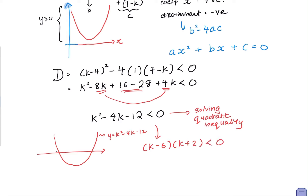Factorizing gives k minus 6 times k plus 2 less than zero, which means the intercepts are k equals negative 2 and k equals 6. Since we want the section where the function is less than zero — that is, below the x-axis — the answer is negative 2 less than k less than 6.